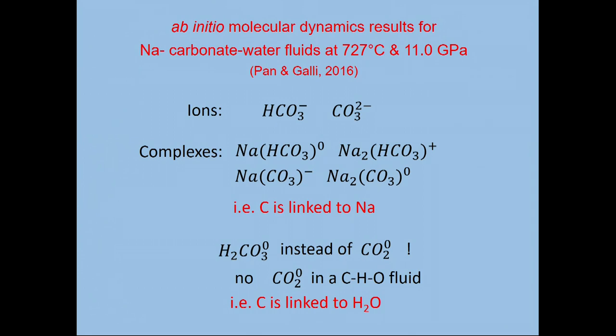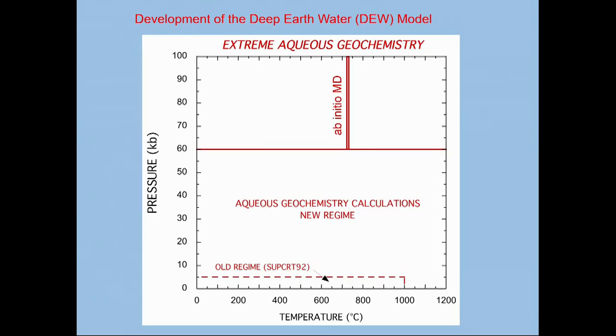So now we have new linkages between carbon and other species in the fluids. All of this led to a great expansion of our ability to do geochemical modeling, from the old regime here, going up to 5 kilobars or 0.5 GPa, and expanding up into this region of 6 GPa or 60 kilobars, well into the upper mantle.